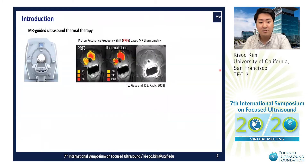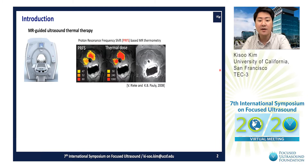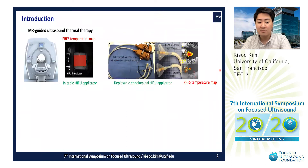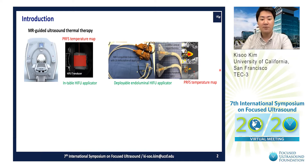In MRI-guided ultrasound thermotherapy, as you know, MRI can provide superior tissue contrast, non-ionizing, and many kinds of quantitative imaging like MR-thermometry. The Proton Resonance Frequency Shift (PRFS) method is commonly used for MR-thermometry. Our team at UCSF has developed MR-guided ultrasound thermotherapy with external and internal heat delivery using PRFS thermometry.